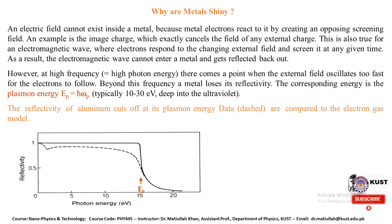However, at higher frequencies where the photon energy is high, there comes a point when the external field oscillates too fast for the electrons to follow. Beyond this frequency, a metal loses its reflectivity. The corresponding energy is the plasmon energy Ep = ℏωp, and typically this energy is around 30 electron volts.